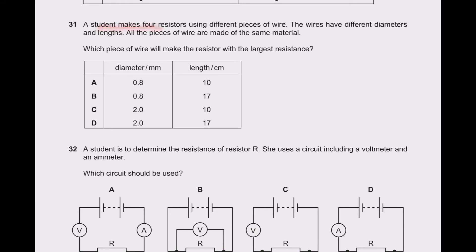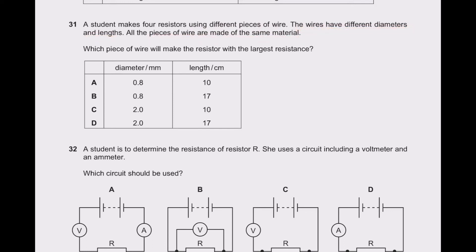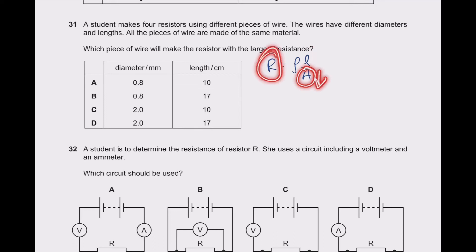Question 31: a student makes four resistors using different pieces of wire with different diameters and lengths, all the same material. Resistance R = ρL/A. More length means more resistance; less cross-sectional area means more resistance. Looking at the values, option B has more length and the least diameter, giving the largest resistance. Option B is the right answer.